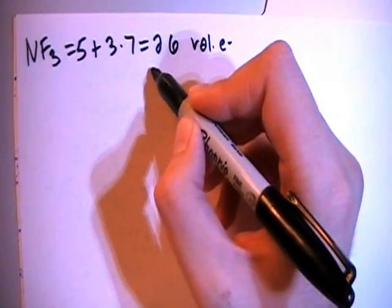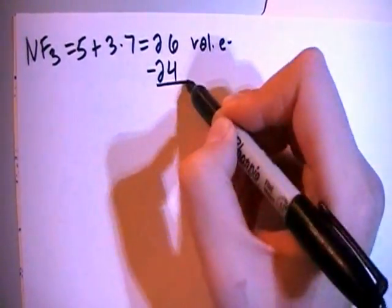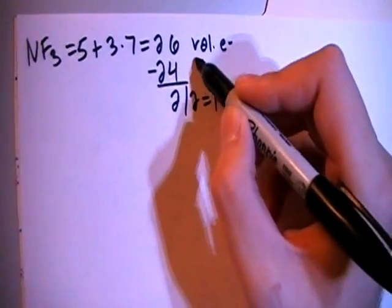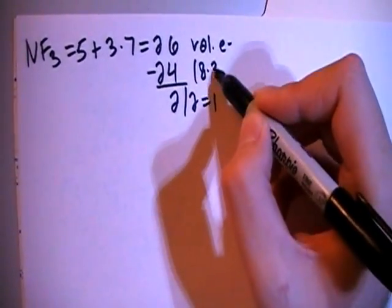We can subtract out the largest multiple of 8 which is 24 and that's going to give us 2 remaining, divide that by 2 gives you 1 non-bonding pair and since 24 is equal to 8 times 3,